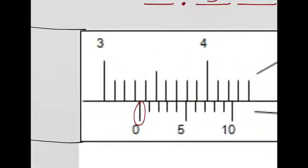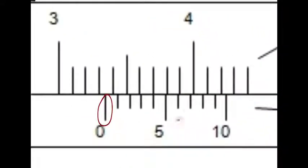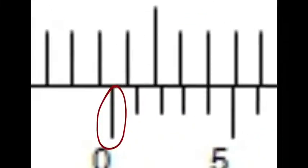So the way we get the last reading is we look at the moving scale here. Remember, that's where the last reading comes from. And we look along the moving scale to see where a line from the moving scale and a line from the fixed scale perfectly match up the first time.